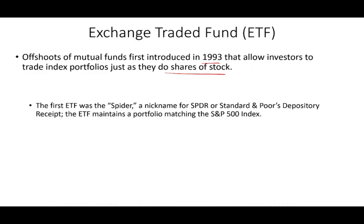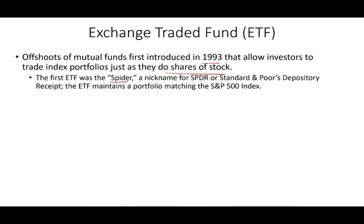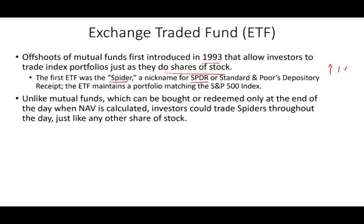The first ETF created in 1993 was called the Spider, nicknamed with the symbol SPDR, and it tracks the S&P 500 index. So if the S&P 500 index went up 1% that day, the ETF will go up by 1%. Keep in mind the index is traded throughout the day — it's not bought and sold at NAV. Unlike a mutual fund, which can only be bought or redeemed at the end of the day at net asset value, the ETF you can trade throughout the day.